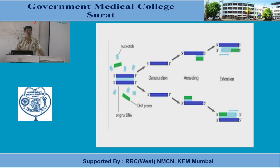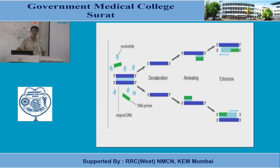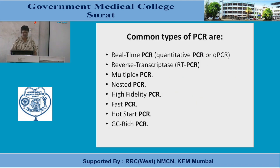PCR has been mainly used for inborn errors of metabolism. It may be that after 20–25 years each city will have many laboratories with this machine. There are a number of uses of PCR — these are the common types of PCR we will discuss: real-time PCR, reverse transcriptase PCR, multiplex PCR, nested PCR, high fidelity PCR, fast PCR, hot start, and GC-rich PCR.